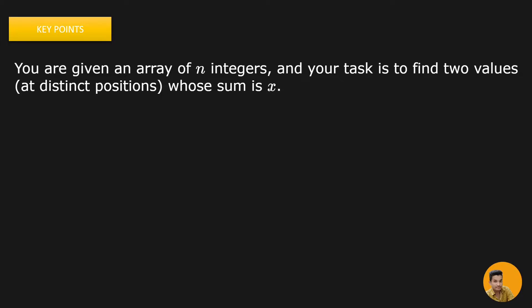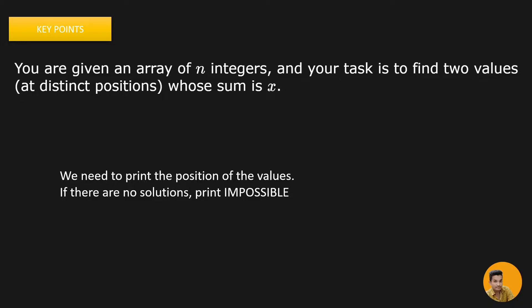Hey everyone, I'm Dev Shikha Sirwani, welcome to my channel Cortez. Today we will solve the Sum of Two Values problem in the CSES problem set. The key points are: we will be given n integers and our task is to find two values at distinct positions whose sum equals x. If that's not possible, we need to print 'impossible'.